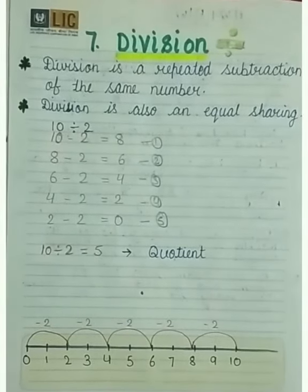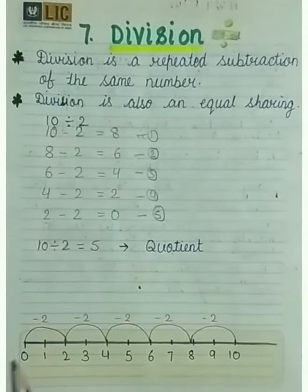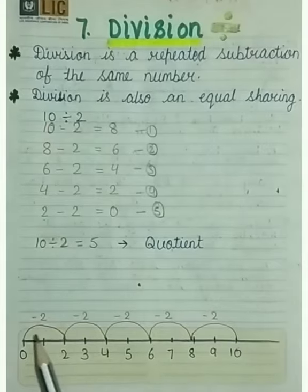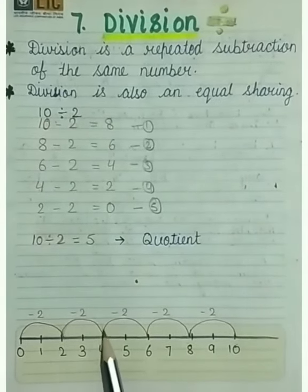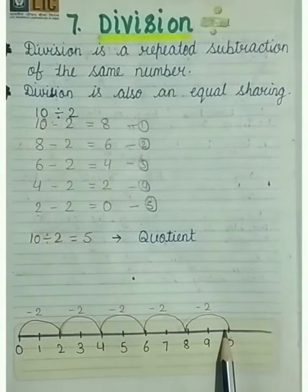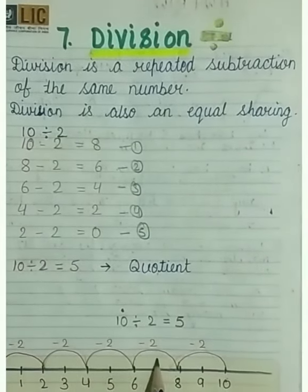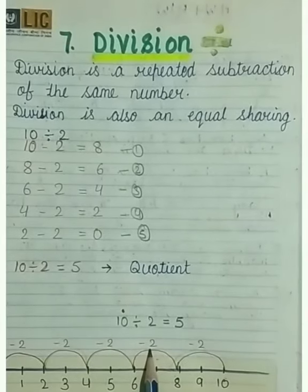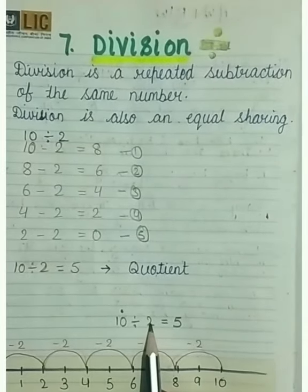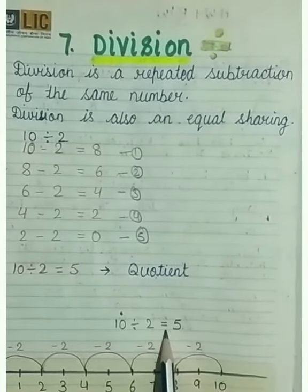I have also told you that division is an equal sharing. How? First we will make a number line, share in a group of 2's and see how many groups are formed. Here we saw 5 groups are formed of 2's. That means if we divided 10 in 2's group, 5 groups are formed. From 10 divided by 2 equals 5.